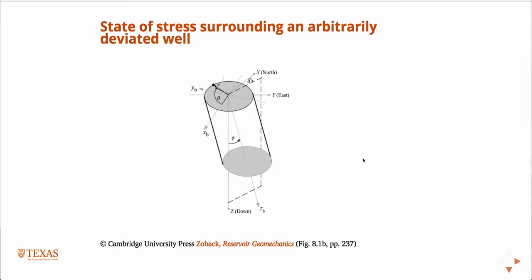So delta is the azimuth of the toe of the well, in the plane of the earth, northeast, measured from north. And then delta is the angle of deviation, and it could go from 0 to 90.